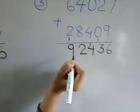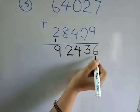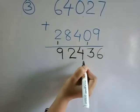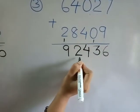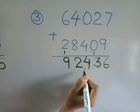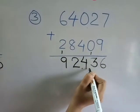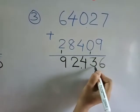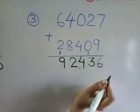Now the answer. Unit, tens, hundred, thousand, ten thousand. Ninety-two thousand, four hundred thirty-six.